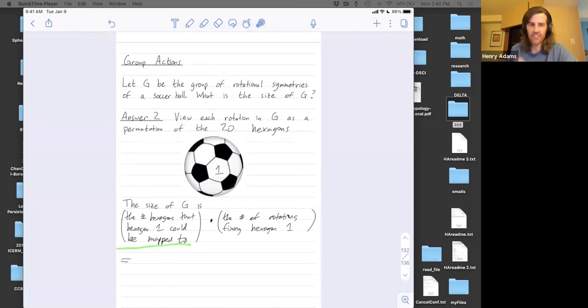So this number here, how many hexagons could hexagon one be mapped to? Well, you could take hexagon one and map it to any of the other 20 hexagons by a rotation. So this should be 20.